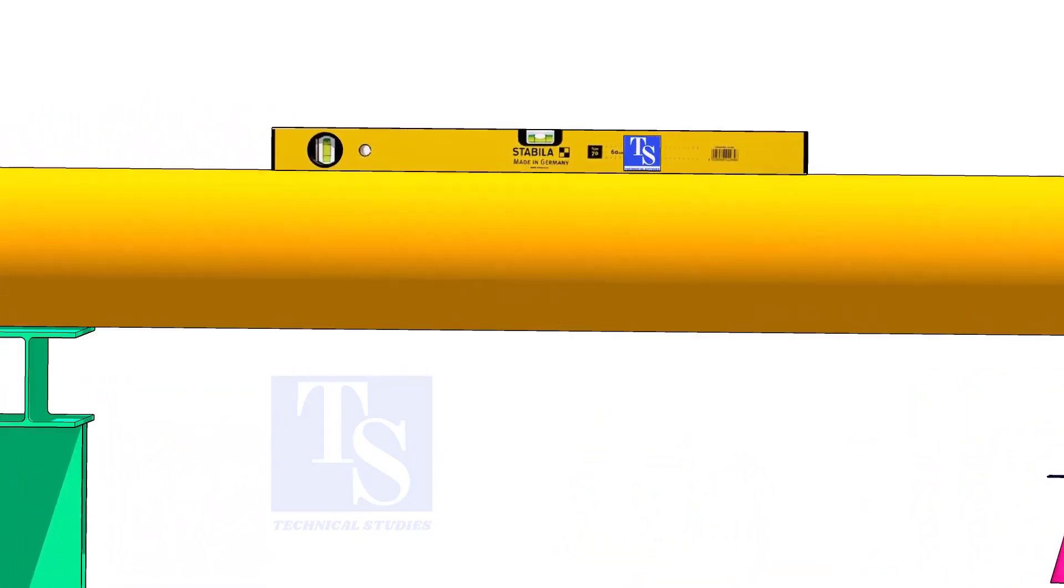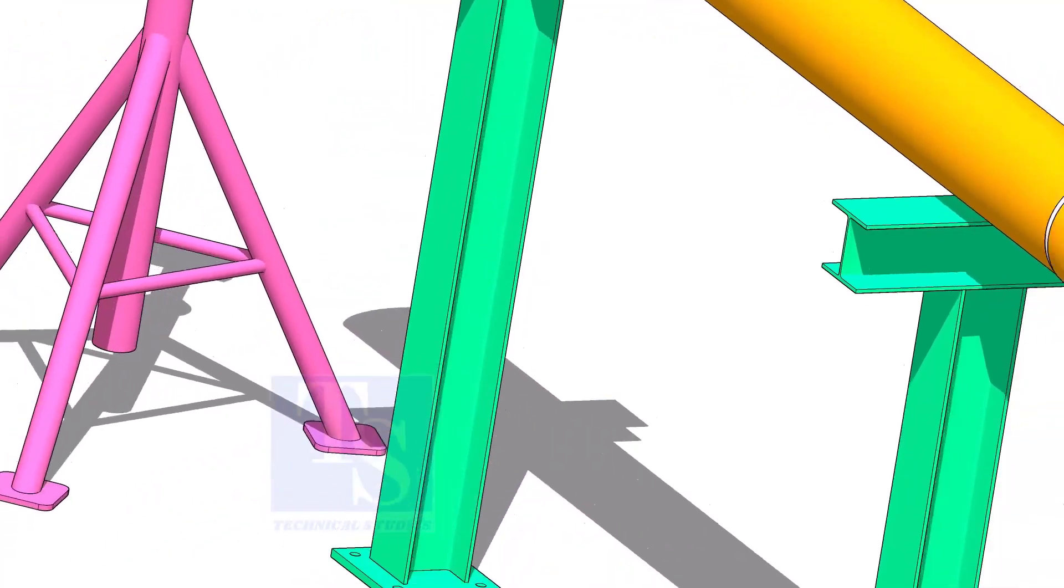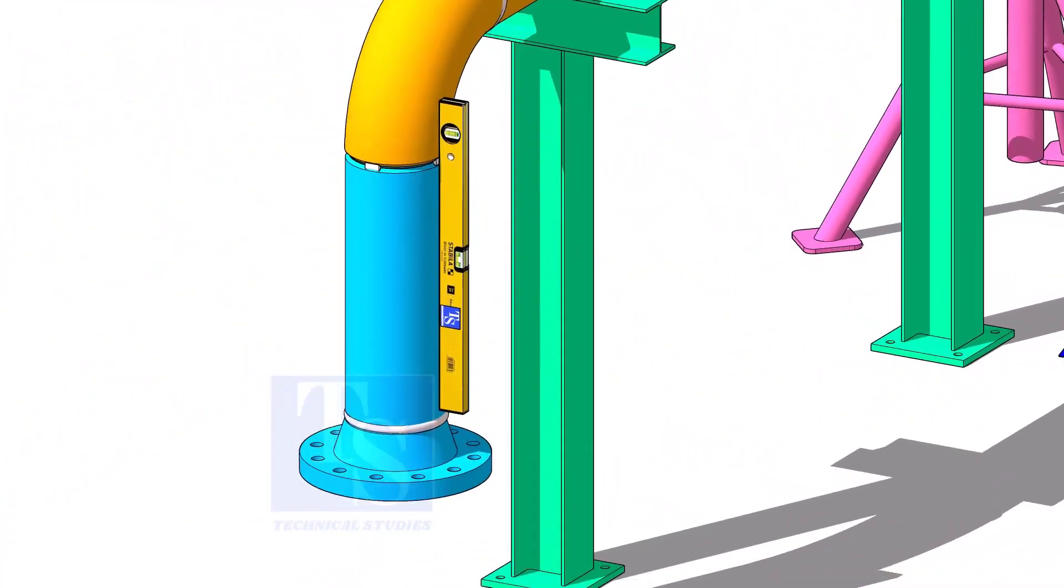Rotate spool number 2 vertically, as shown, and level the pipe. This position will ease the fitup of spool 4.